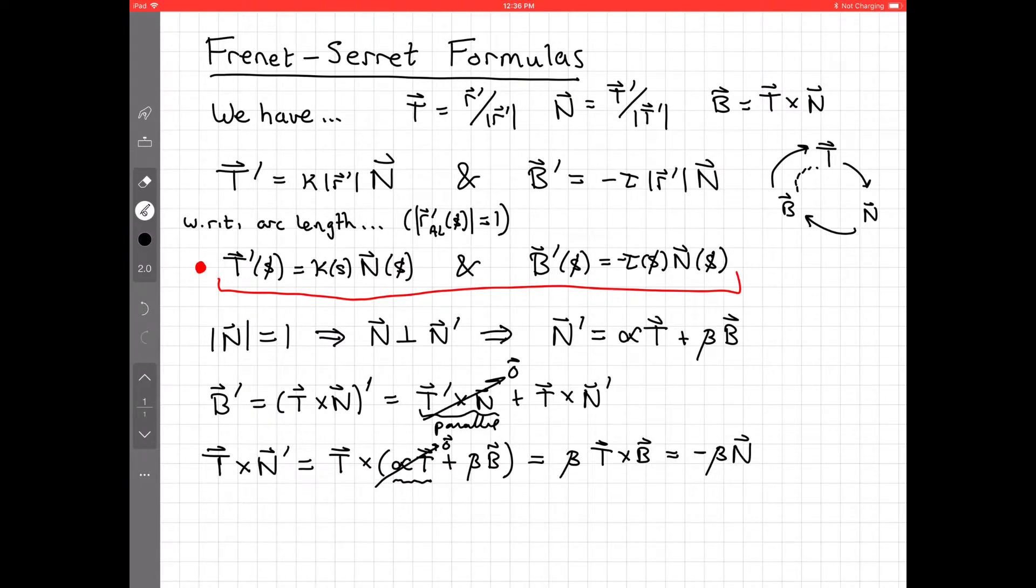All right. But we already know, right, that b', by definition, b', which is this, is, well, or almost by definition, is negative tau times the length of r'. So what can we conclude from this?